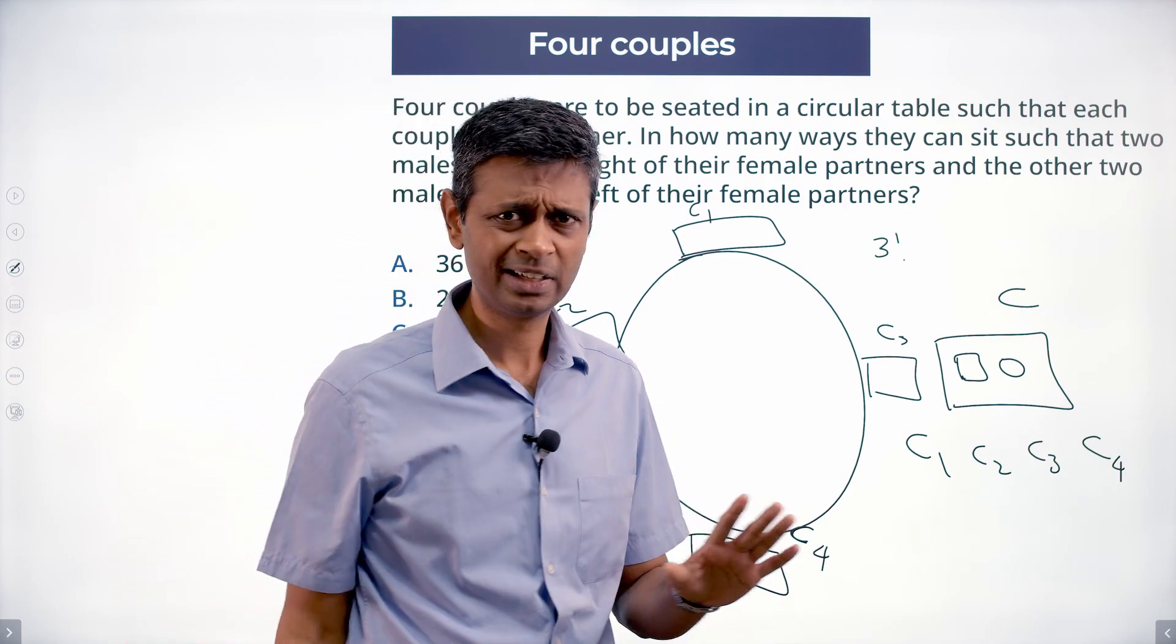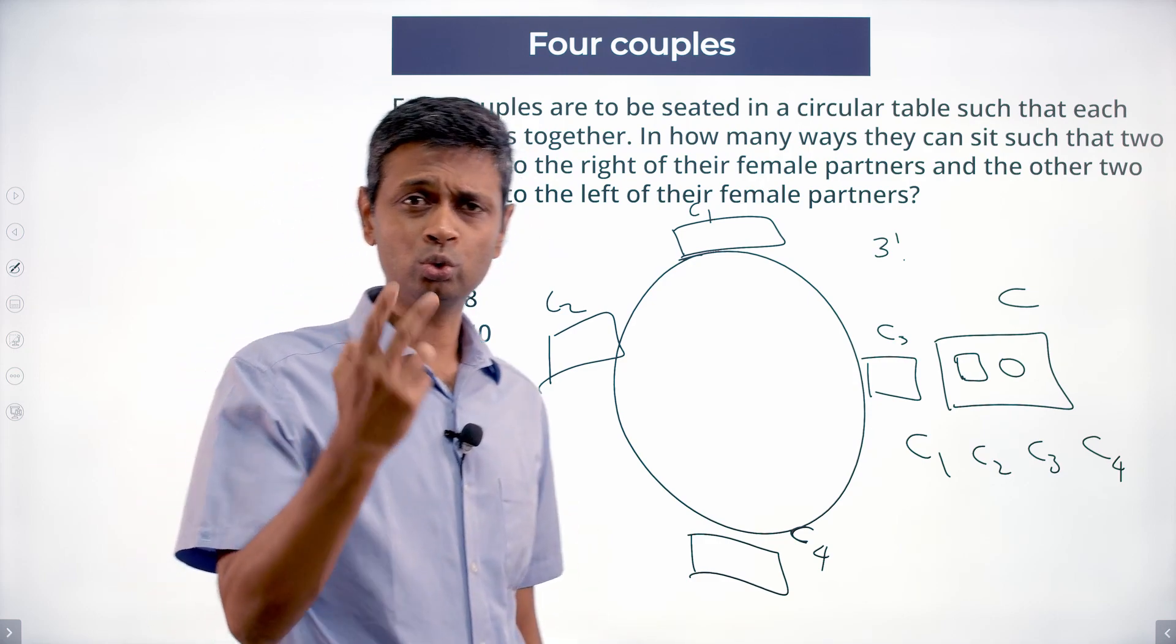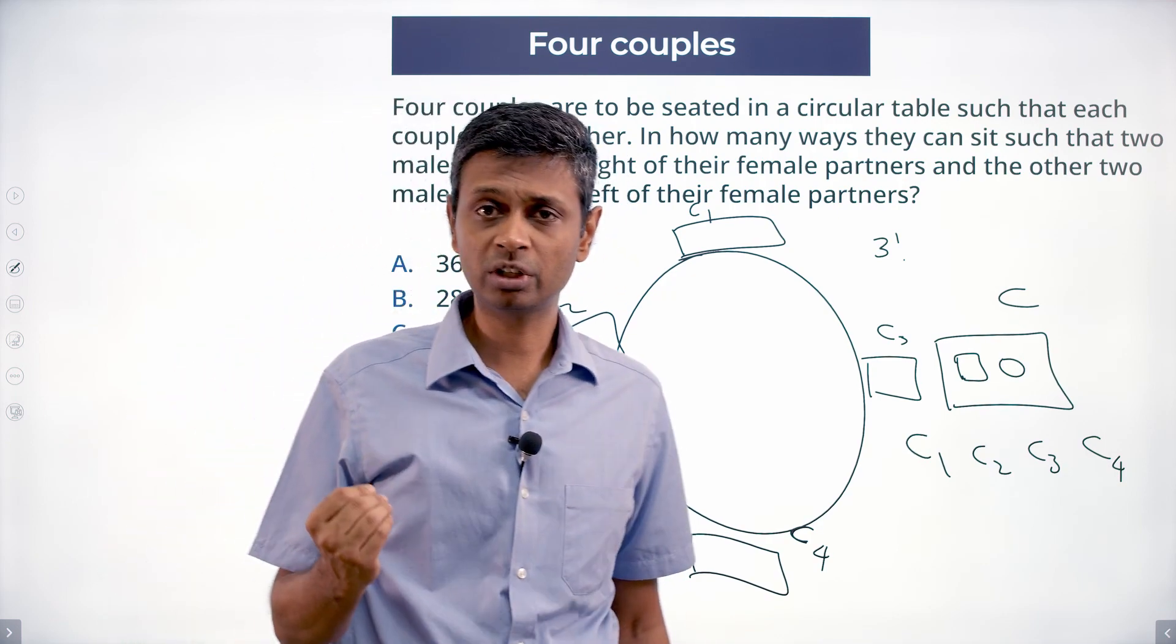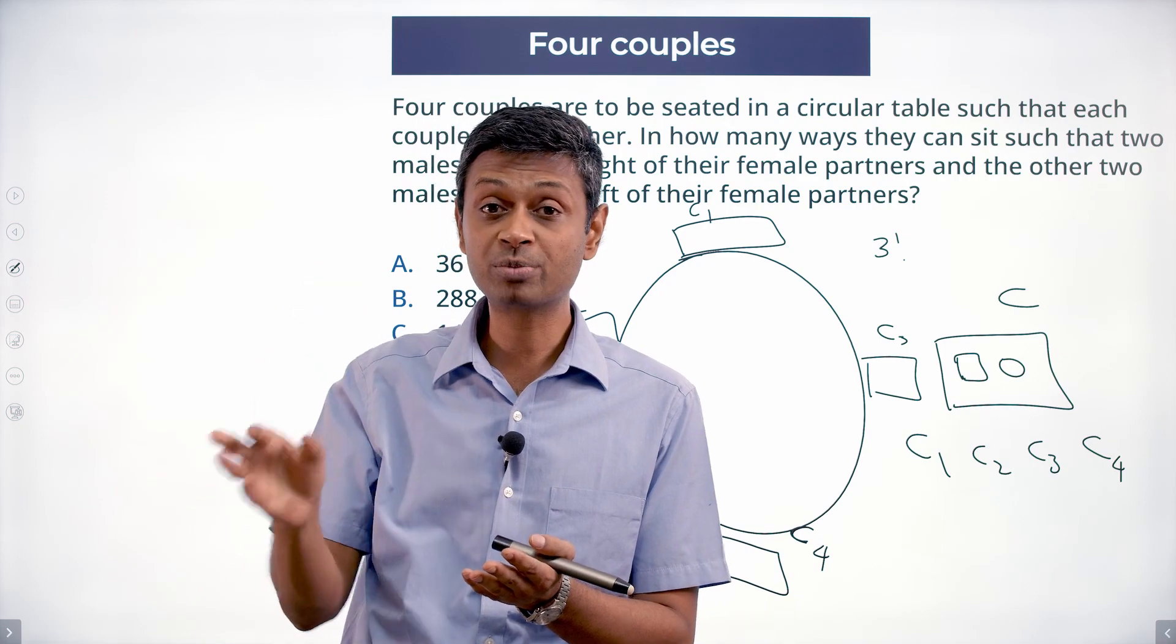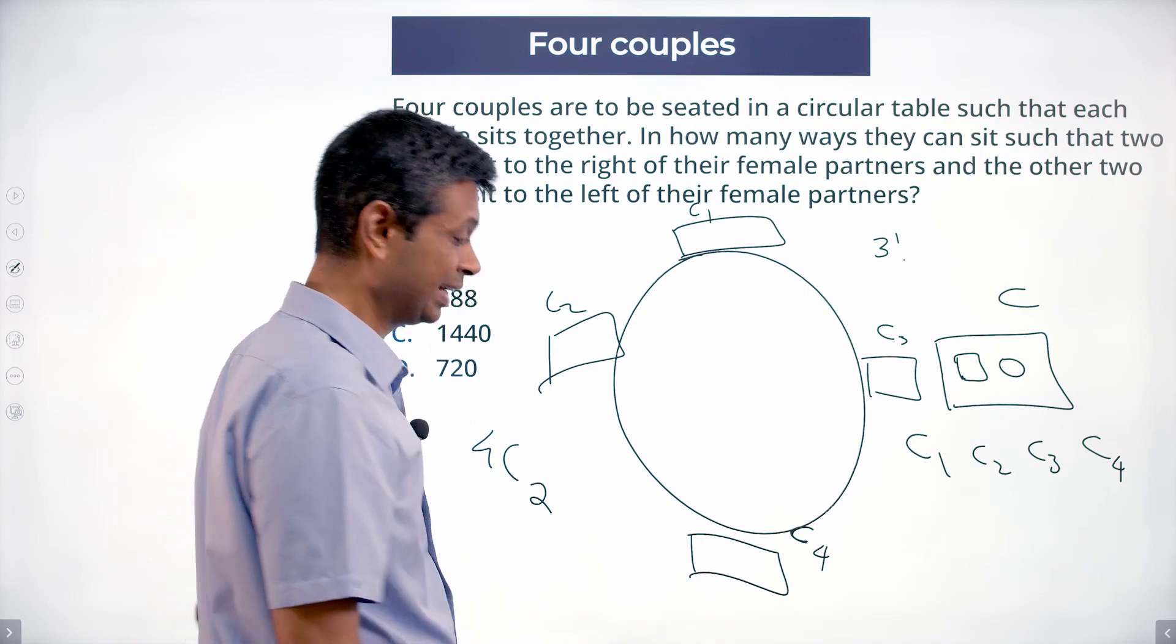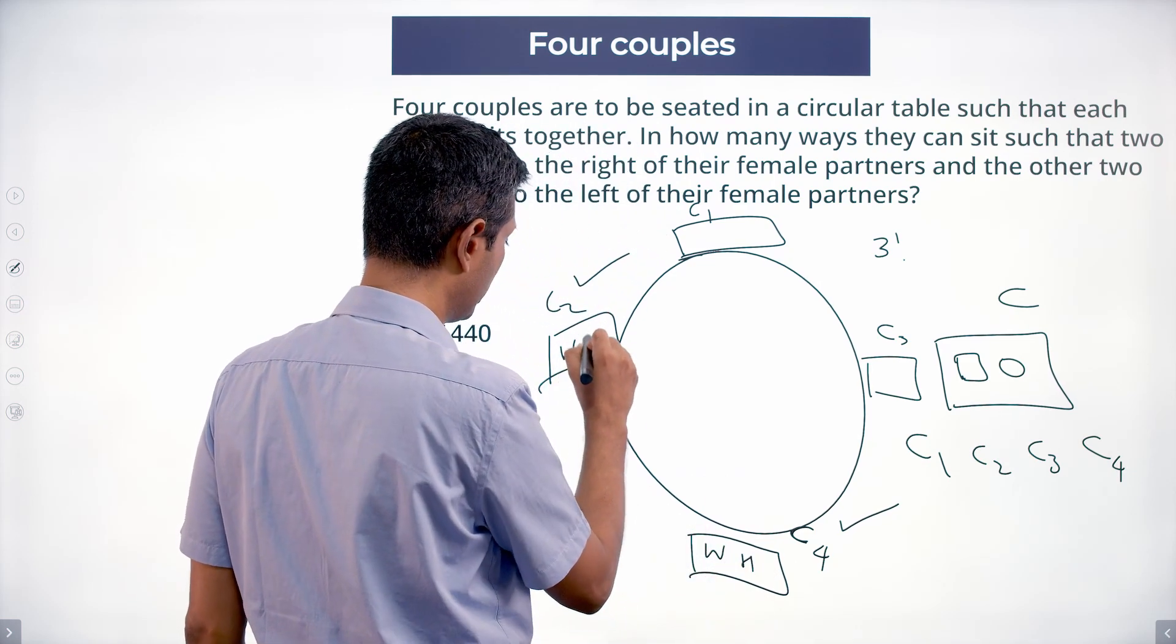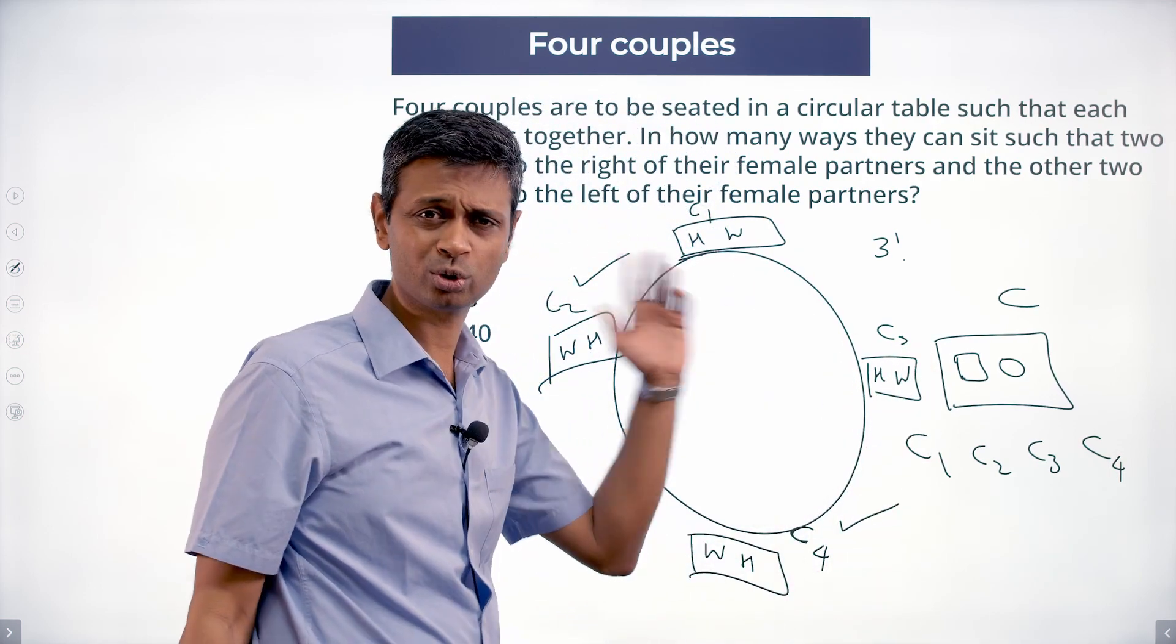So far, now between C1, C2, C3, C4, some two the husband has to be on the right, the other two the husband has to be on the left. Out of these four couples C1, C2, C3, C4, we need to select two and say, okay, for these two the husband will be to the right and the other two the husband will be to the left. From four select two, 4C2. Let's say the two that we happen to have selected turn out to be C2 and C4. So this will be wife-husband, wife-husband, husband-wife, husband-wife. These two they are to the right, those two they'll be to the left.